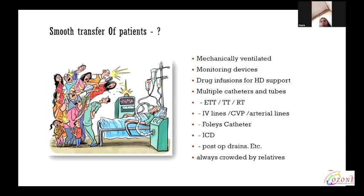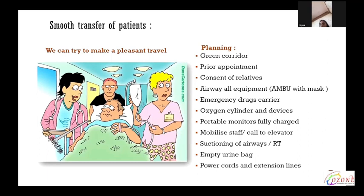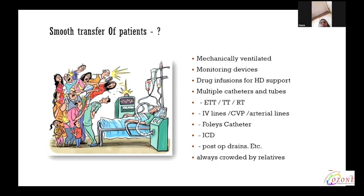The next goal is smooth transfer of patients. Sometimes we have to mobilize the patient from the ICU for these cases. These patients are mechanically ventilated with many monitoring devices, drug infusions for hemodynamic support, and multiple catheters and tubes such as ET tube, Ryle's tube, IV lines, CVP and arterial lines, Foley's catheter, ICD, and post-op drains. We have to take care of all these. These patients are always surrounded by relatives. Is it possible to transfer them smoothly? Planning is very essential.